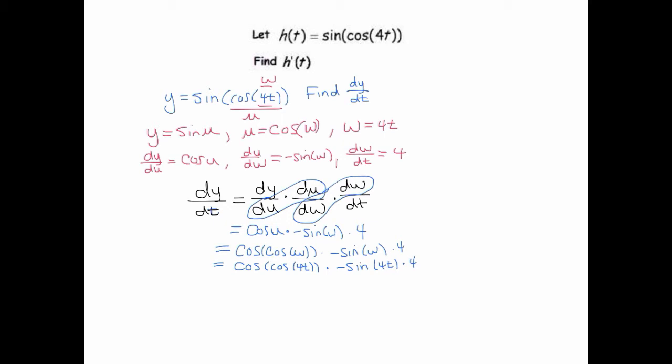Now if you got this problem wrong when you tried it, I bet you what you forgot was probably this negative sine of 4t, and that's what happens I think when students start to begin this process - they kind of miss that there's an inner function. And if you think about it, the broad outermost function is sine, right?